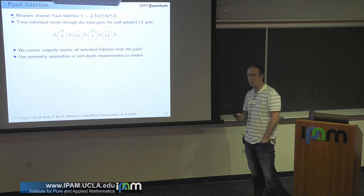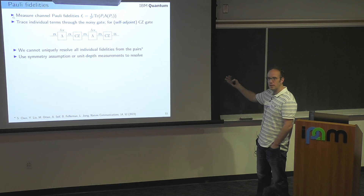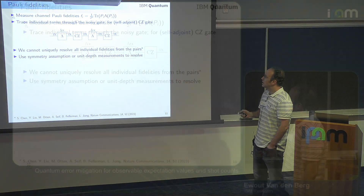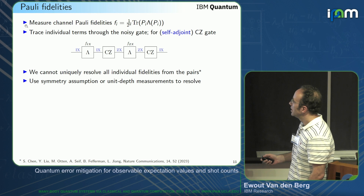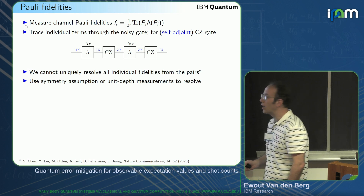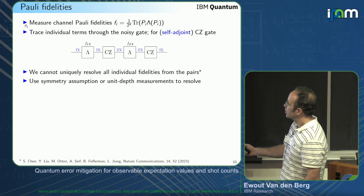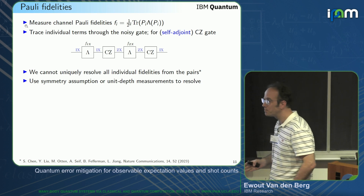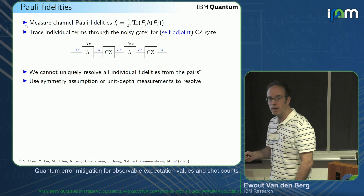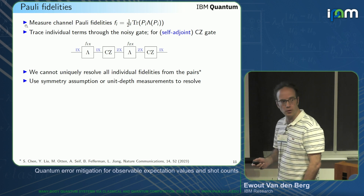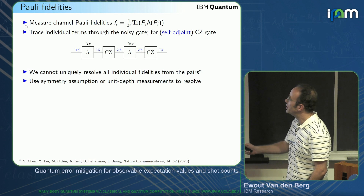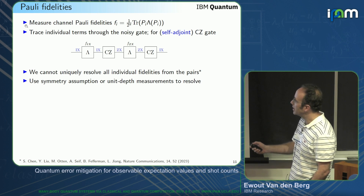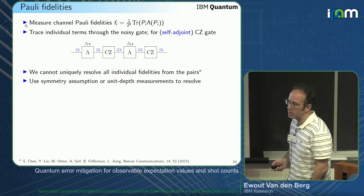If you apply twirling at the end of the circuit, you can do SPAM-free measurement of these fidelities. We would like to have individual fidelities, but this is shown to be impossible by a nice paper if the support of the Pauli changes — for example, if there's an identity at one location and a non-identity at the other. In that case, we just say the fidelity of IX equals the fidelity of ZX — that's the best we can do.